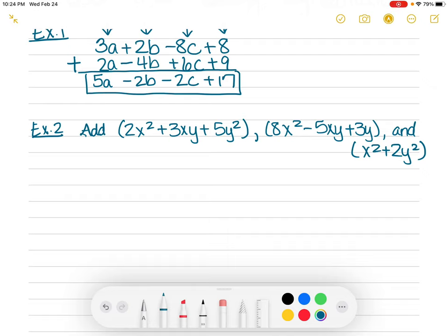And then the last one they want you to add to it is x squared plus 2y squared. So it's telling you to add all three of these parentheses together. So what you're going to do is you're going to take the first one and you're just going to put it like this. And then I'm going to take this second one right here and I'm just going to line up everything with it. So the 8x squared, the first part, is going to go here underneath the 2x squared, right? Because they're like terms, the x squares are the same.